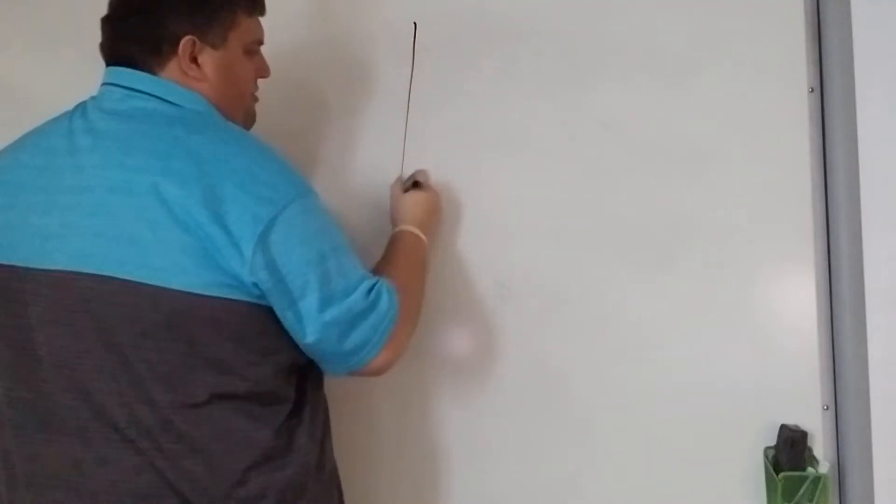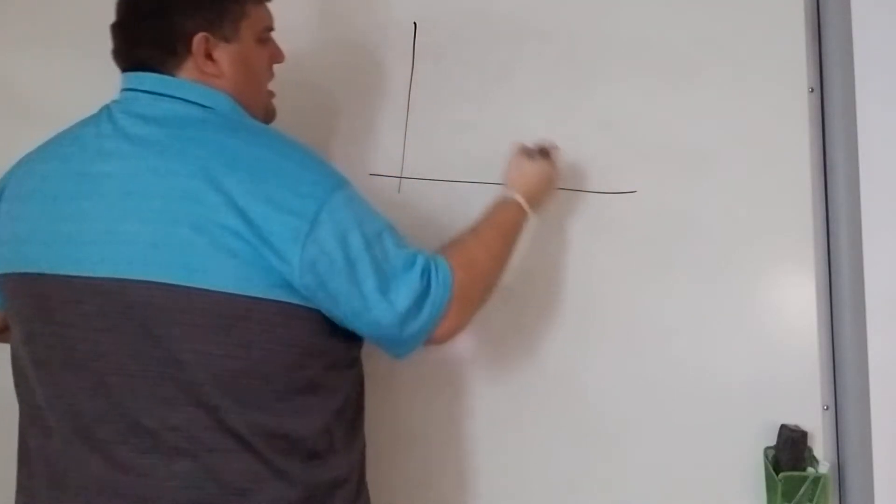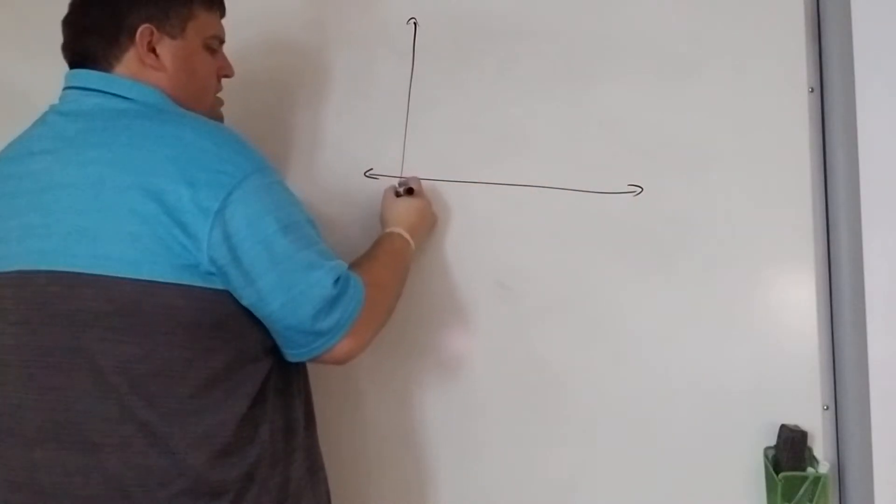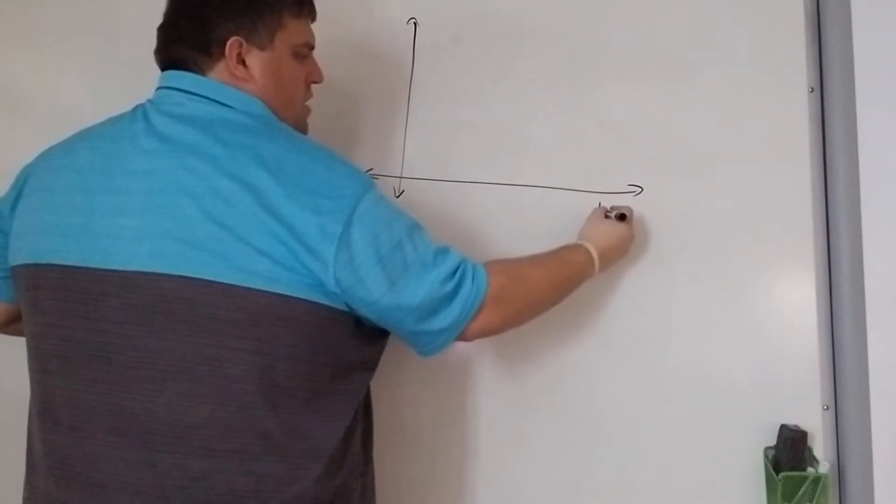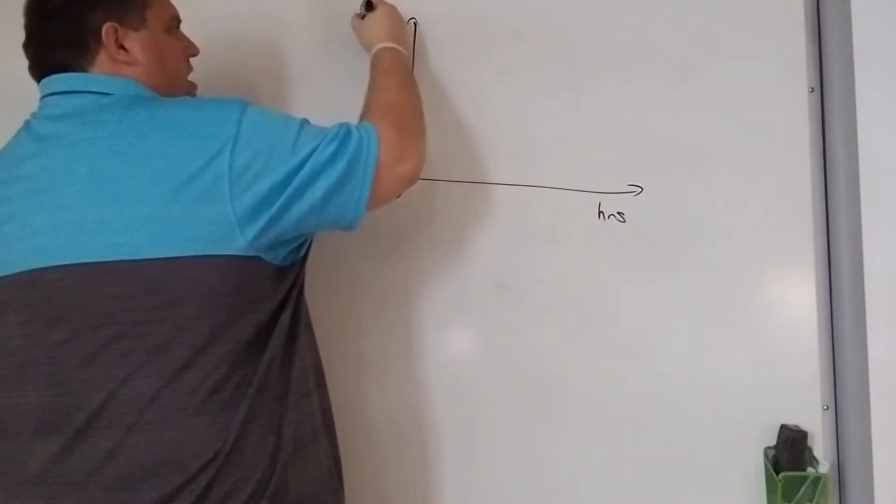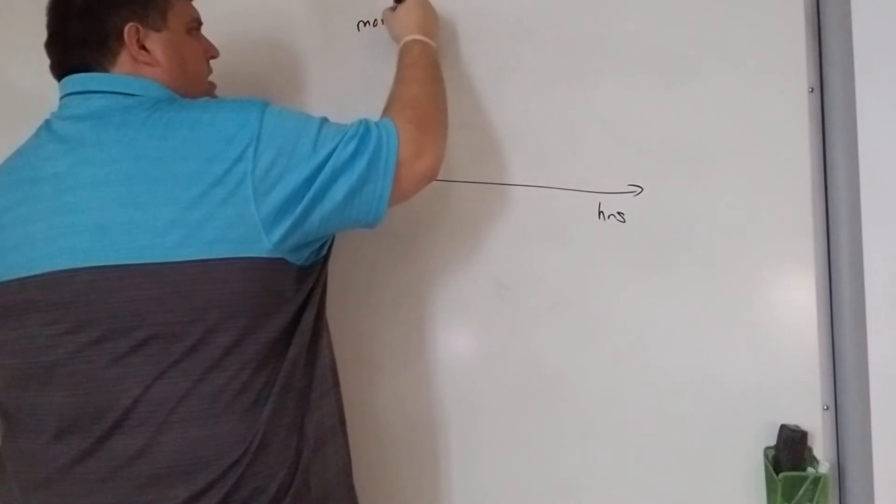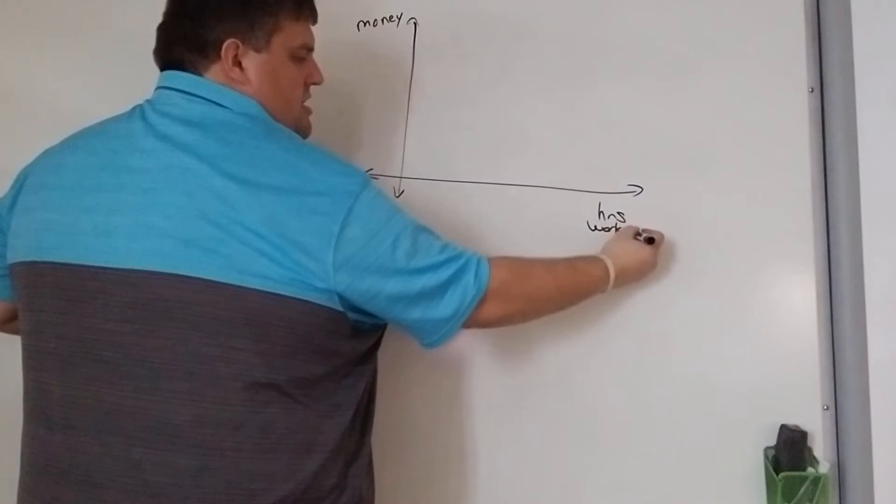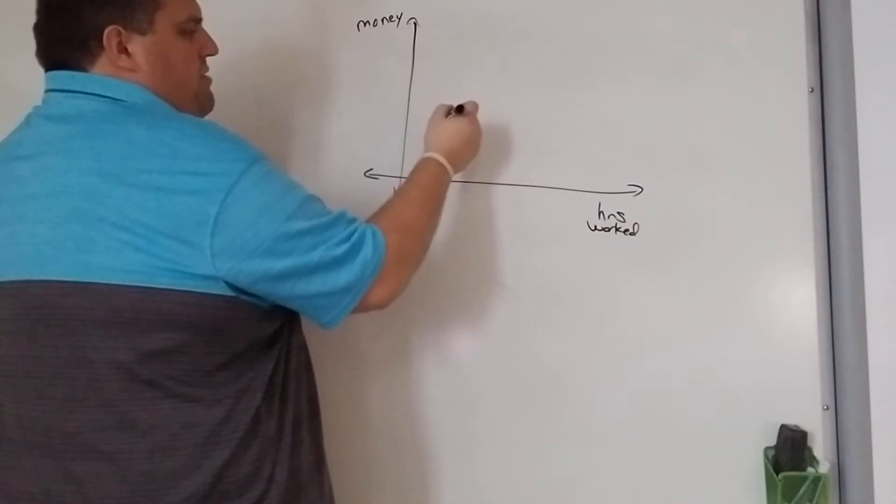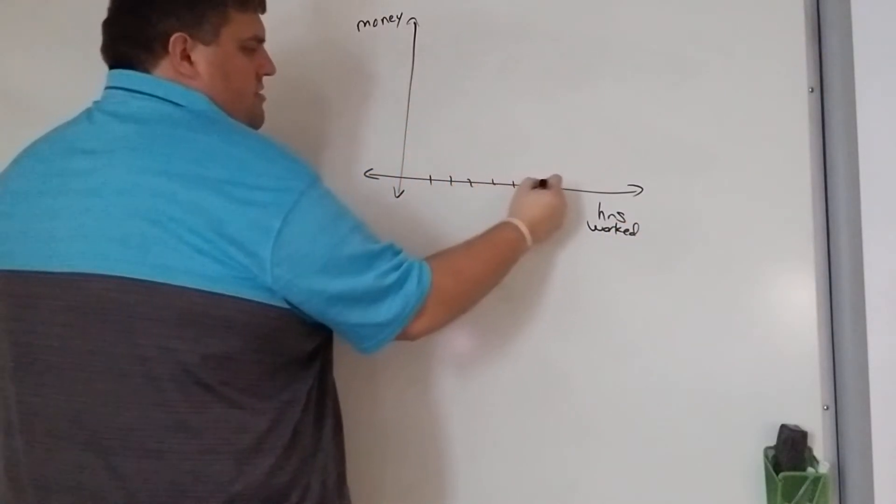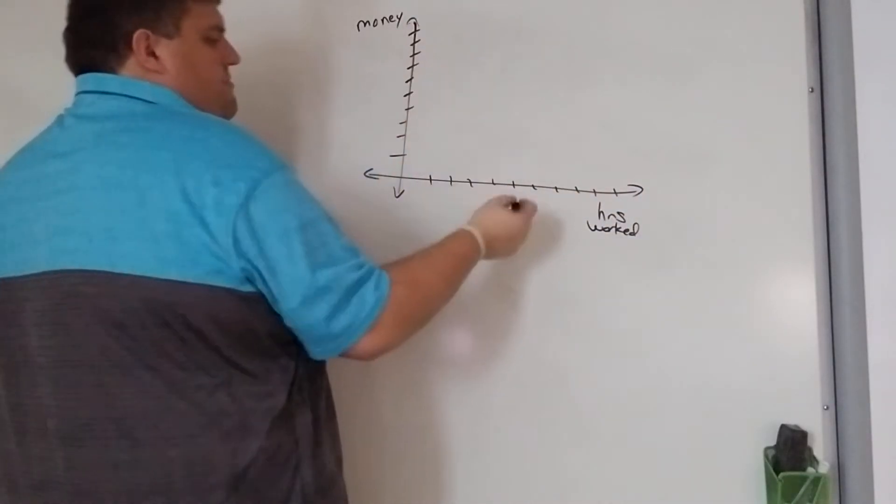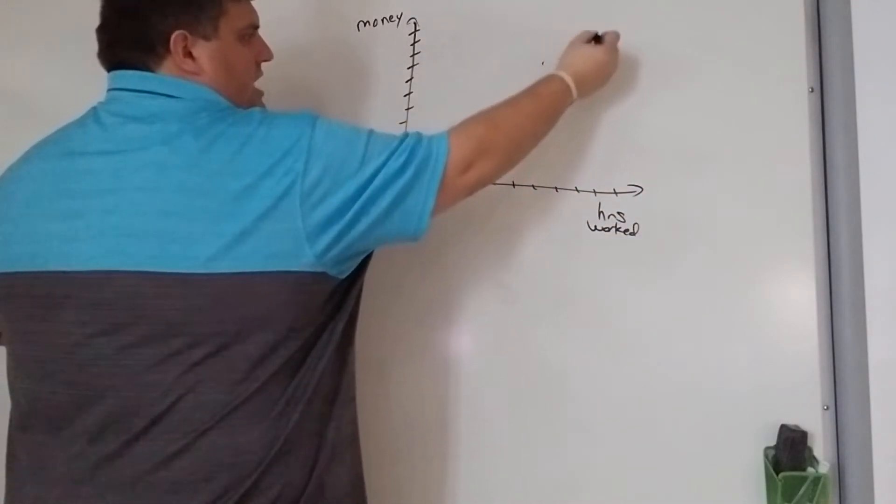And scatter plots are just a set of points on a graph. Maybe we have hours and money. Hours worked, we'll say. And we have some scatter plot that maybe those go by, whatever, and it looks something like this.